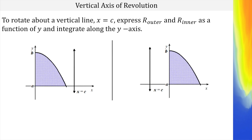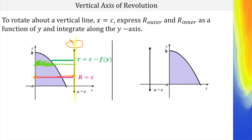Now let's switch gears to a vertical axis of revolution. We're going to do the same thing — find a big R and a little r — and the process is really the same, just sideways instead of up and down. With the axis at x equals c, the big R, or outer radius, is the distance from the y-axis to our axis of rotation: just c. The little r takes the entire distance from the y-axis to x equals c, but subtracts the width of the function: c minus f of y. Notice with a vertical axis of rotation, we're doing everything in terms of y.